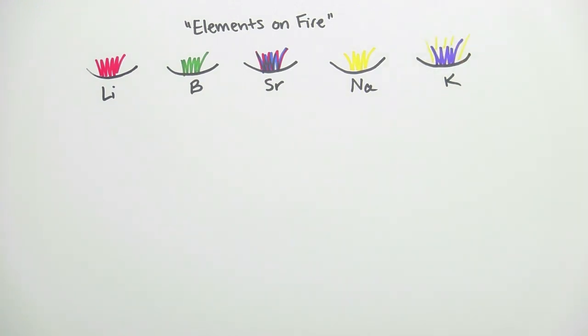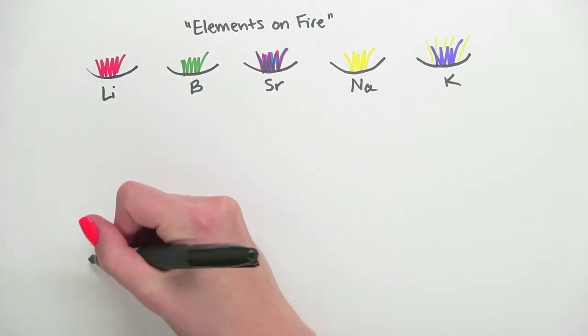So what's happening? Well, the flame heats up the elements, giving them more thermal energy. This excites the electrons from their ground or lower energy state to an excited or higher energy state. This is what that looks like.